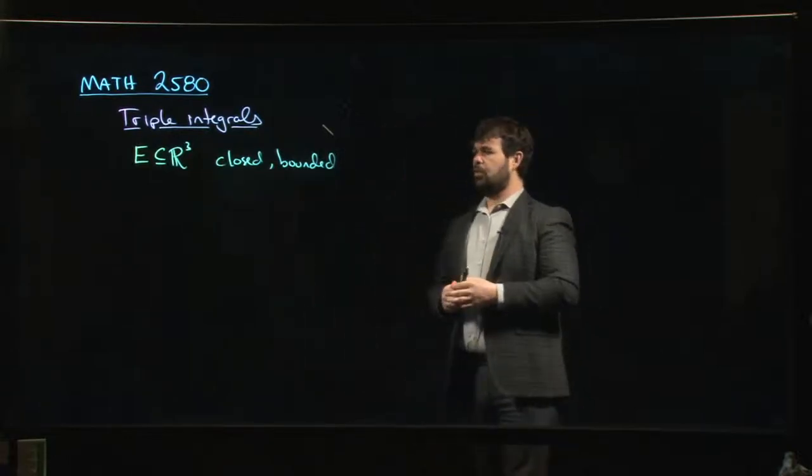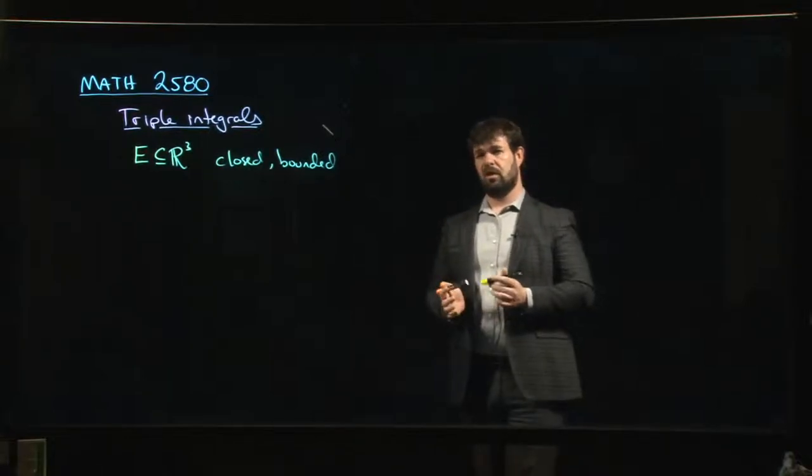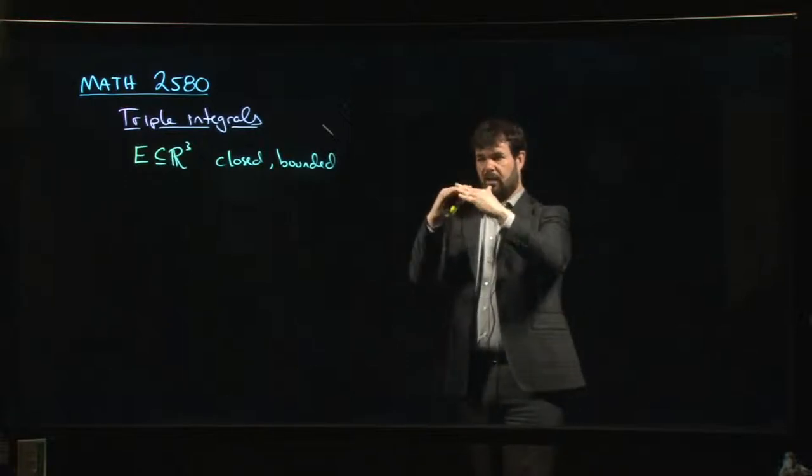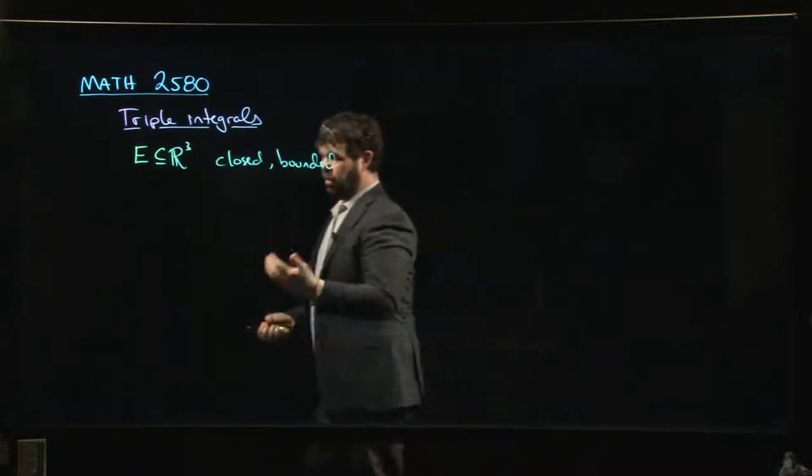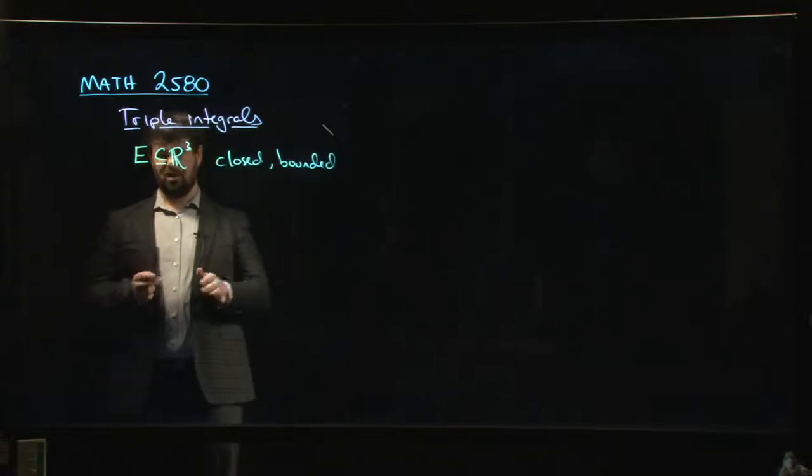Generally, it's good enough to know that your boundary is sort of piecewise smooth is generally the condition. So the boundary is made up of a bunch of intersecting surfaces that are all smooth, and you use those to define the boundary. That's generally good enough.